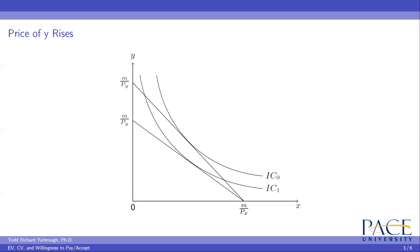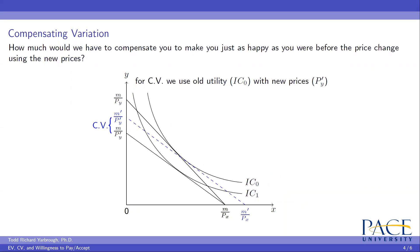The first way we think about this is compensating variation (CV): how much would we have to compensate you to make you just as happy as you were before the price change, using the new prices? The argument is: a price change has occurred — the price of good Y has increased — so how much would we have to increase your income such that you are just as happy as you were before, given that price change? CV uses the old utility level but with new prices.